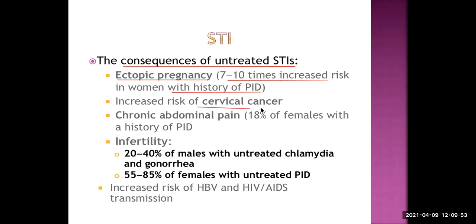There is an increased risk of cervical cancer as a result of STI. Human papillomavirus infection is a definite cause of cervical cancer and it is a type of STI. Chronic abdominal pain is very common in women because of STI as a result of PID. This acute PID may develop into chronic PID, resulting in persistent lower abdominal pain. Almost 18% of females are complaining of chronic abdominal pain because of PID.